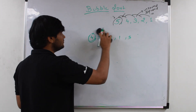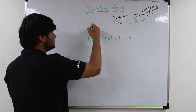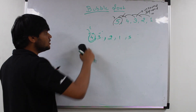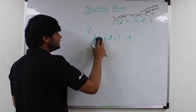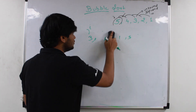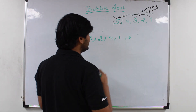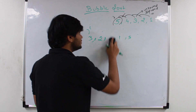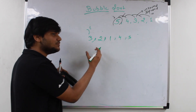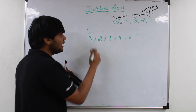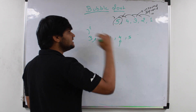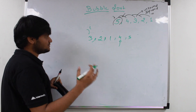Now again we will just start i from the very 0th index. Here you can see 4: when 4 and 3 will be compared, 4 will be greater than 3, so we will just swap 4 and 3 — 3 will come here and 4 will come here. Again 4 and 2 will be swapped — 2 will come here and 4 will be swapped to here. And again 4 and 1 will be swapped. So here you can see that we just picked out 4 as the maximum element from the unsorted part and placed 4 at its best position. So at each iteration, at least one element is getting placed at its best possible position.